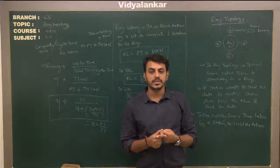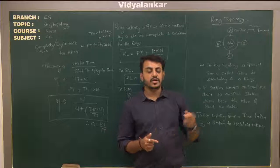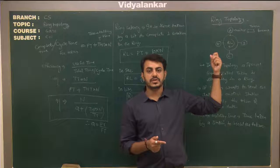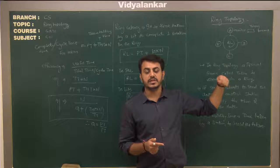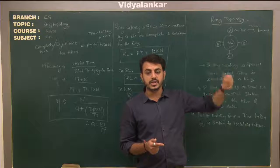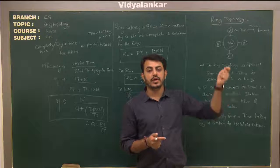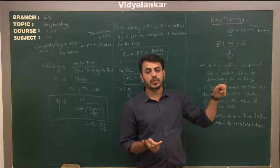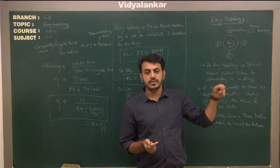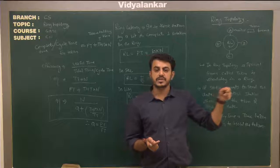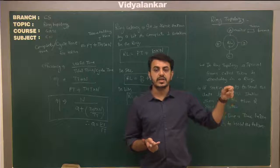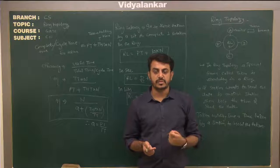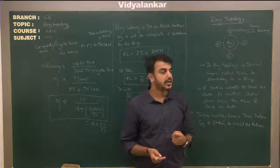Delayed token release is whenever the data sent by the station has been received by another station — or we can say it takes one complete round to the other station and is received by that station — then the station will send the token frame. That is called delayed token release.